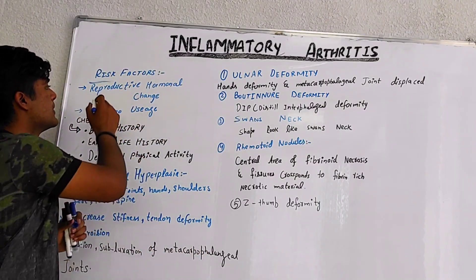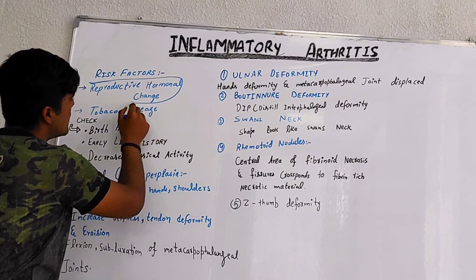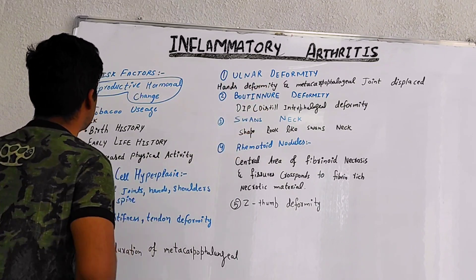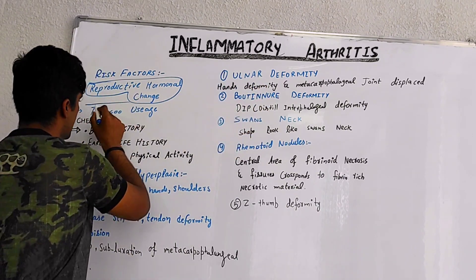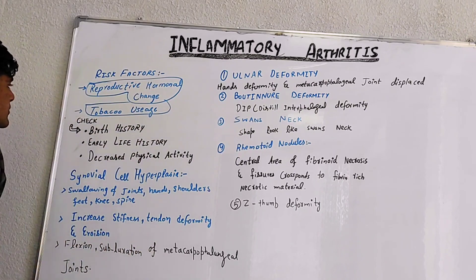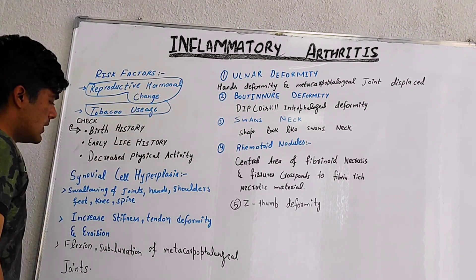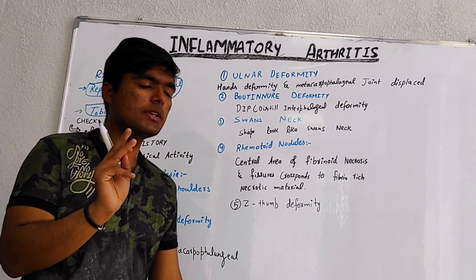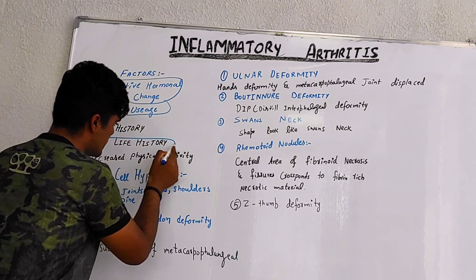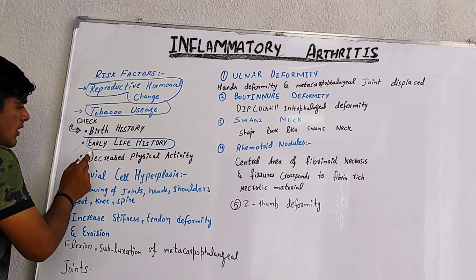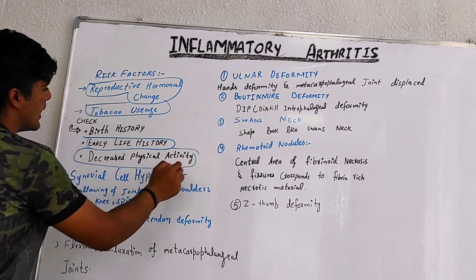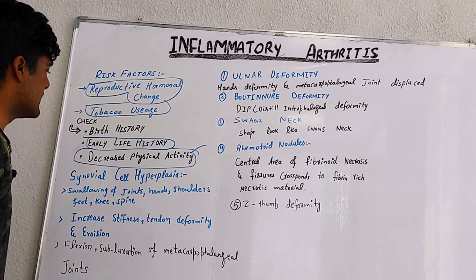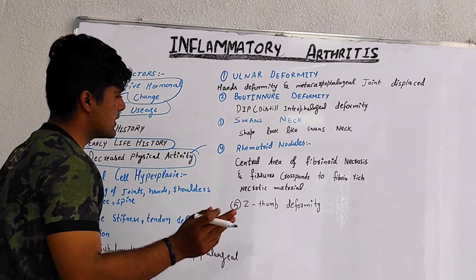Risk factors include reproductive hormonal changes — hormonal changes that may cause arthritis — and environmental factors such as tobacco usage. We have to check three main important points: birth history, early life history, past history, and physical activity — what that person is doing and what type of physical activity they are performing. After checking these, we make a conclusion.